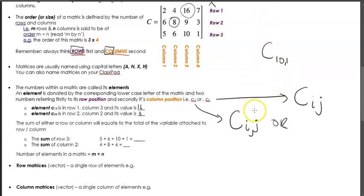The sum of either a row or column will equate to the total of the variable attached to that row or column. All this is saying is that if we wanted to sum row three, we get row three and every single element within row three regardless of what column position it is, we can just sum this up. So five plus six plus 10 plus 1 in this case will be 10 plus 5 is 15 plus 6 is 21 plus 1 is 22.